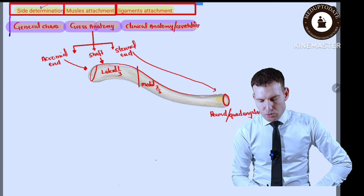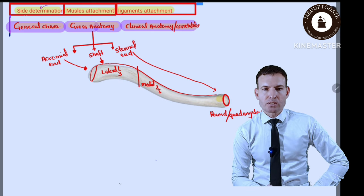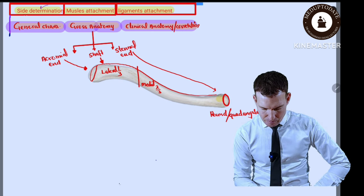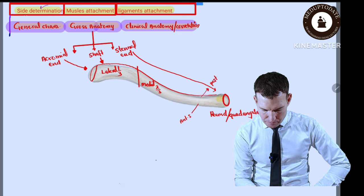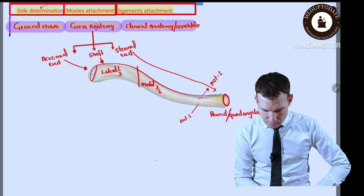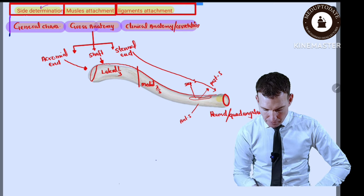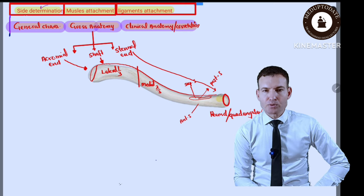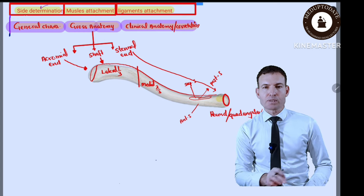In the medial two-thirds we have four surfaces without any border. We have the anterior surface, the posterior surface, the superior surface, and the inferior surface — which will be discussed in another diagram as it is not visible from this view. The superior surface is completely subcutaneous and smooth.